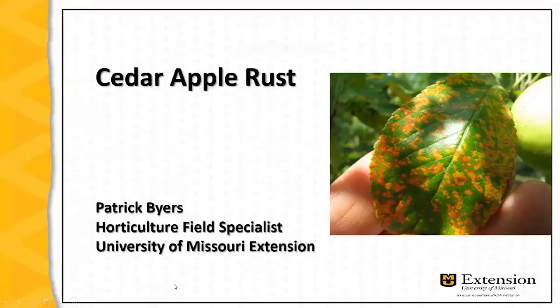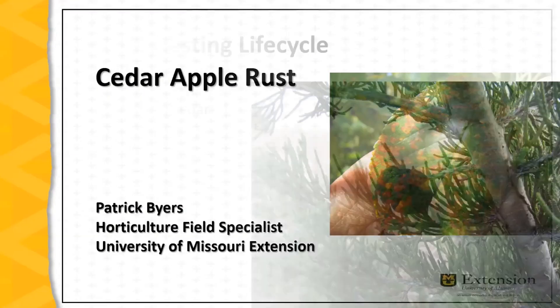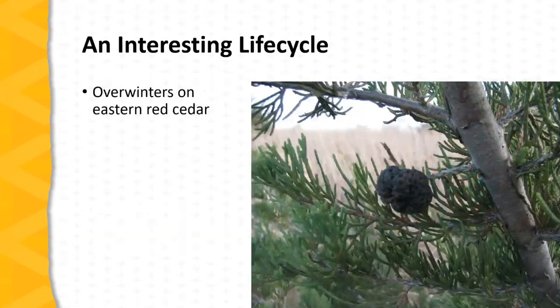This is an exciting time of year from the standpoint of cedar apple rust. It's a fascinating disease, and we'll spend just a minute or two talking about it because it is very timely and very noticeable. Cedar apple rust is a disease of apples and crab apples, but it's also a disease of eastern red cedar and various types of ornamental junipers.